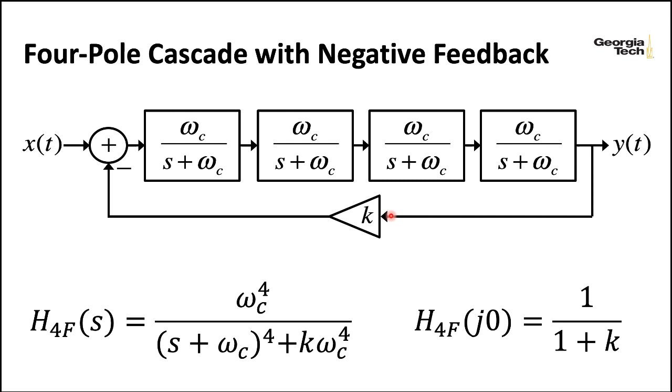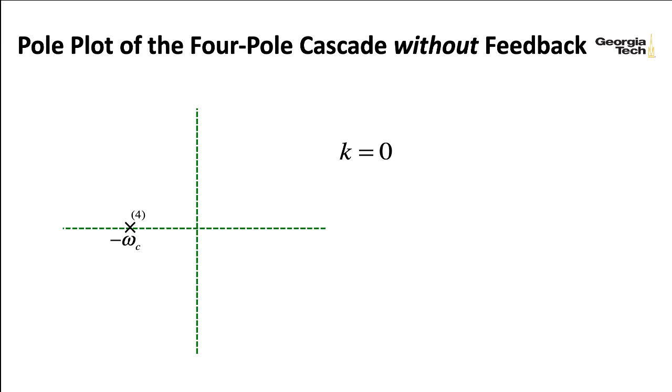If you have just that cascade of those four pole filters, all four of the poles are sitting here at minus omega-c on the S-plane, the Laplace plane, where the horizontal axis is the real component and the vertical axis is the imaginary component on the S-plane. This is for k equals zero with no feedback.